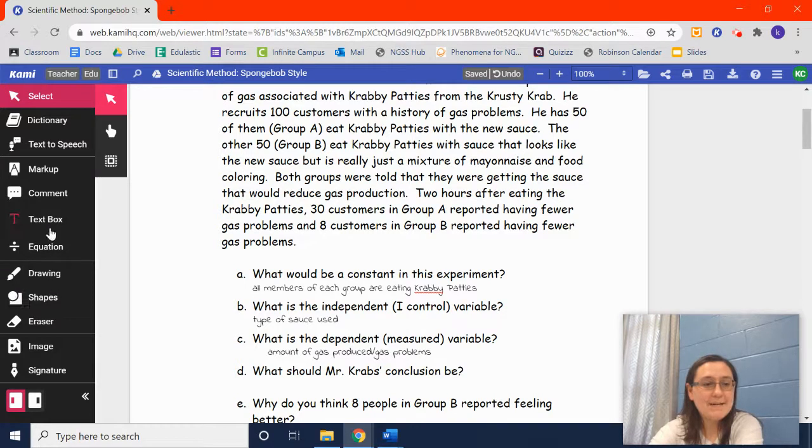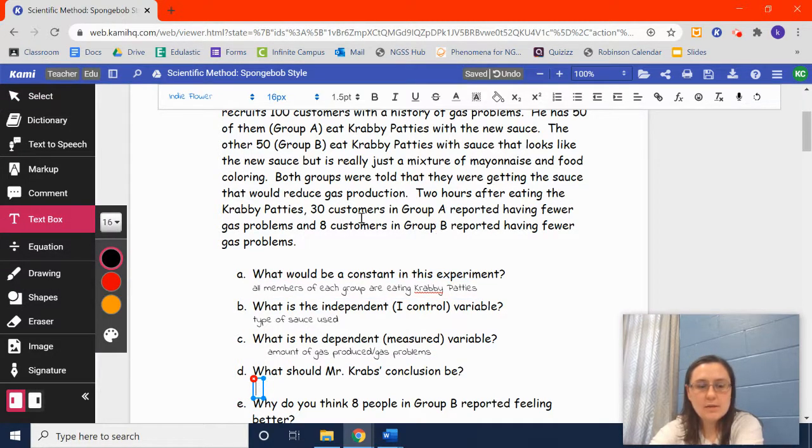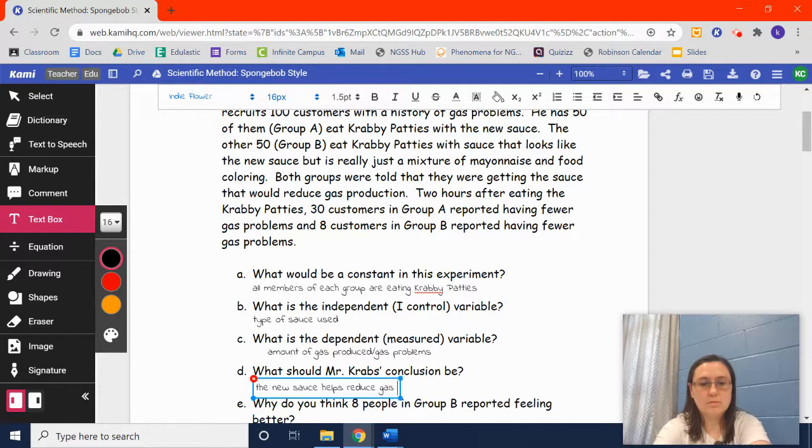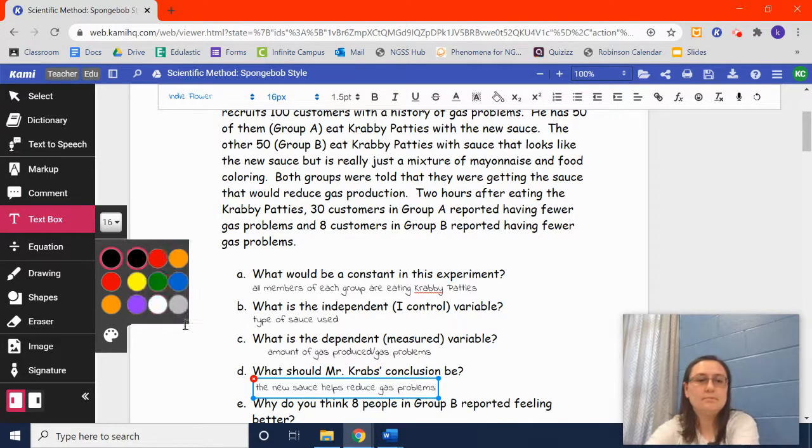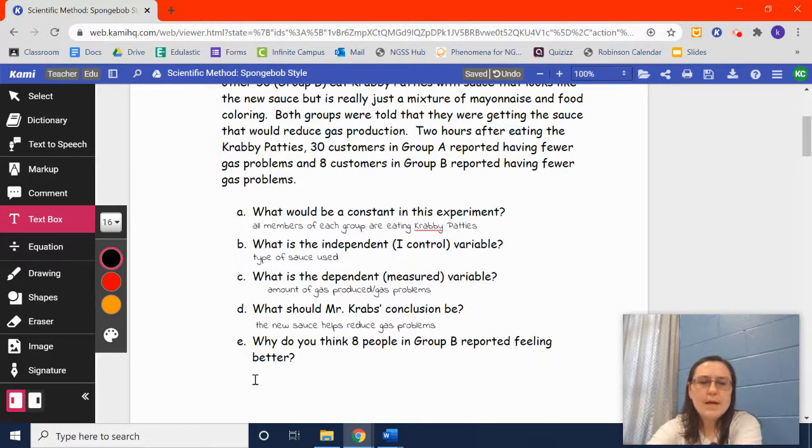What should Mr. Krabs' conclusion be? Well, it says here that 30 in Group A had fewer gas problems. Only 8 had fewer gas problems in B. Group A had the new sauce, so they should have had fewer gas problems, if it worked. And Group B had a pretend sauce, so if they had fewer gas problems, it was just coincidence. So, since way more people, 30 out of the 50, had fewer gas problems in A, and only 8 out of the 50 had fewer gas problems in B, Mr. Krabs' conclusion is that the new sauce helps reduce gas problems.